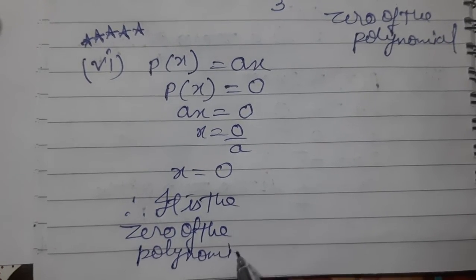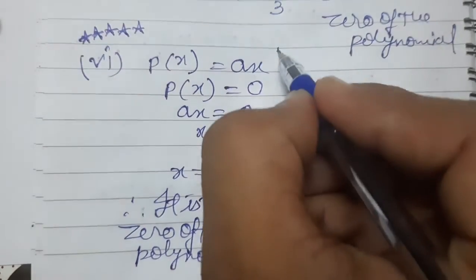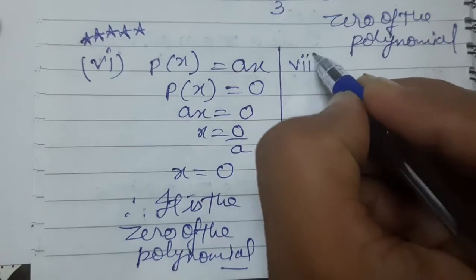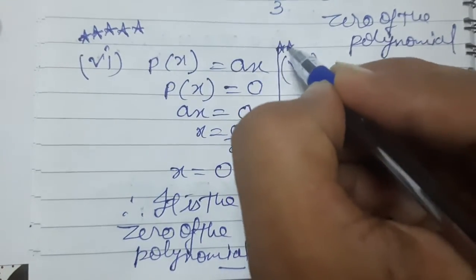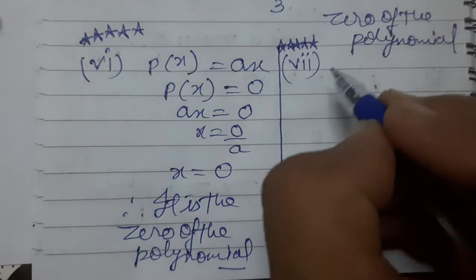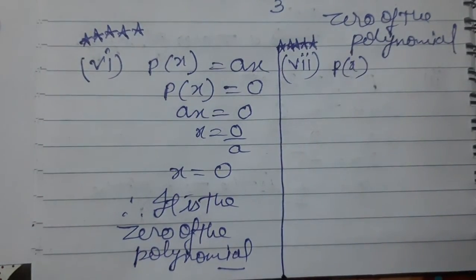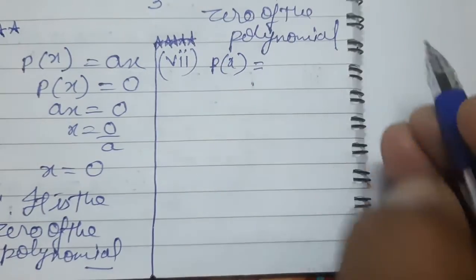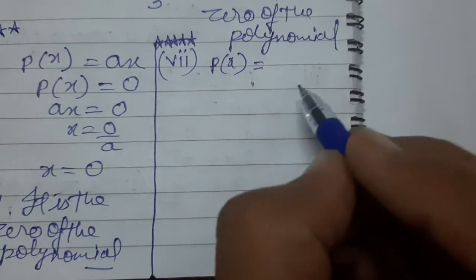Now, next part. Last part, this is the seventh part. This is also a very important part. Different parts are always important. What is our next part? P(x) equals cx plus d.